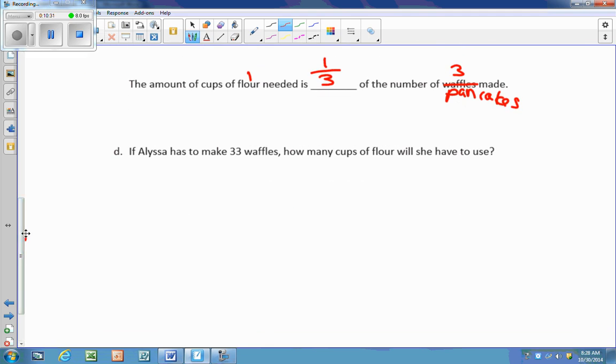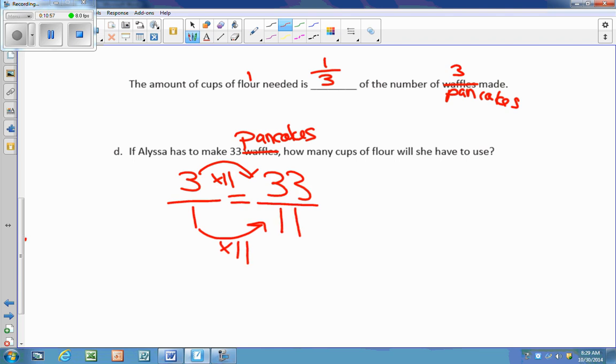The amount of flour needed, one cup of flour for three pancakes is going to give me the ratio of one third, which cannot be reduced. If Alyssa had to make 33 waffles, how many cups of flour will she use? So originally we're going to go back to that original ratio, three pancakes for every cup of flour. And I know I want 33 pancakes, so I'm going to set up an equivalent ratio. So 33 times, excuse me, three times 11 gives me 33. Whatever I do to my numerator, I have to do to my denominator. So that would give me 11 over here. But I want to make sure I'm answering the question, how many cups of flour? So it's 11 cups of flour.